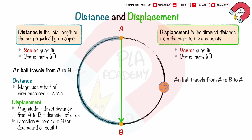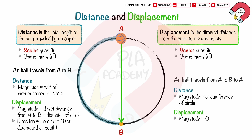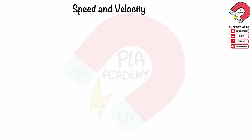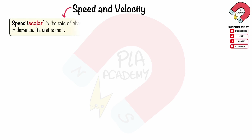When a ball travels back to point A, the distance traveled is equal to the circumference of the circle. The displacement is equal to zero, because the ball has returned to its original position. Speed and velocity: speed is the rate of change in distance.